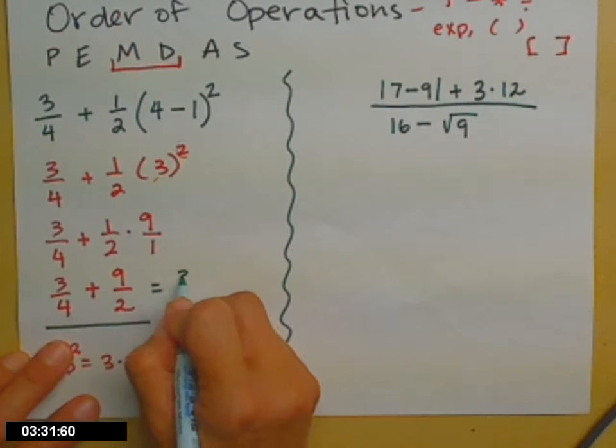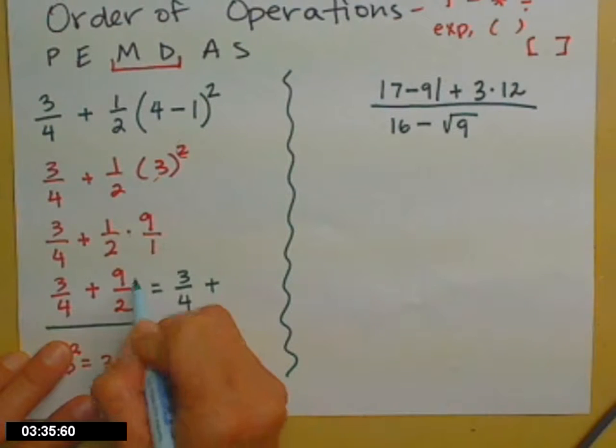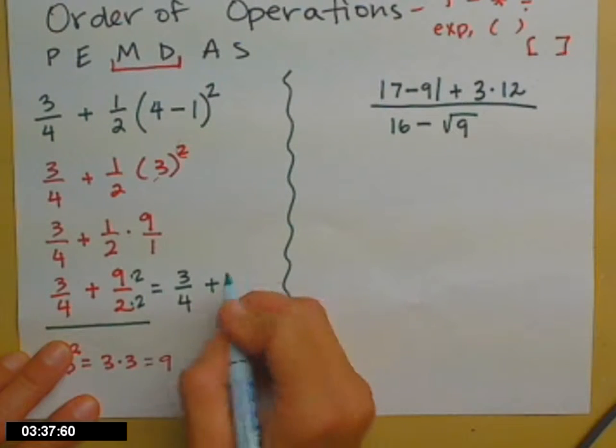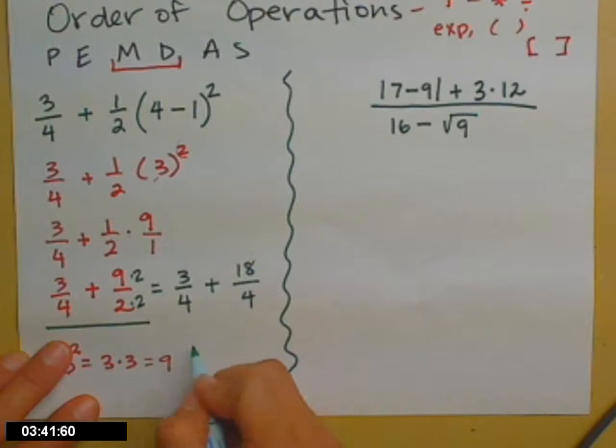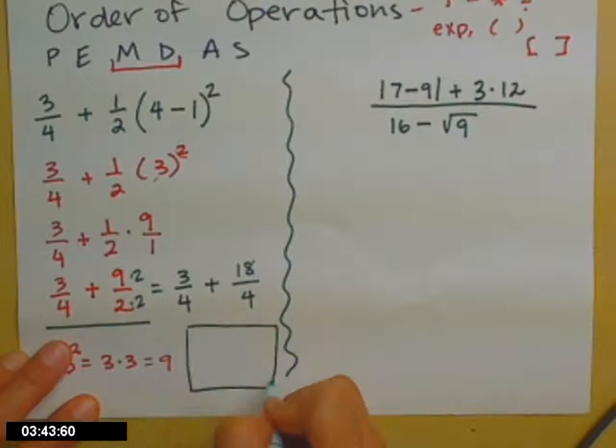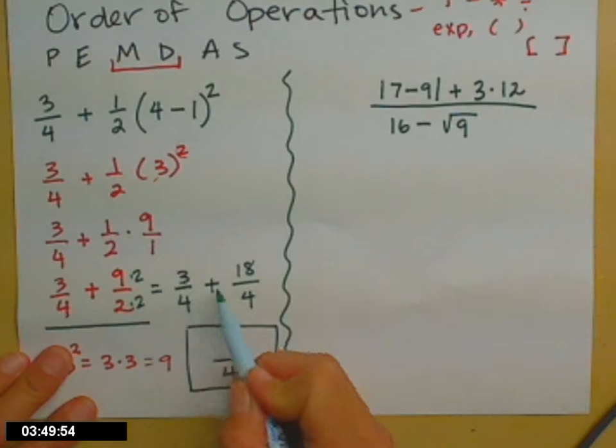So I rewrite each fraction to have it. The 3/4 has it already. The 9/2, I have to multiply top and bottom by 2 to get it. So now I have 18/4. And when you add two fractions, what you do is you have that common denominator that's in your answer, and then you add the numerators. 3 + 18 is 21.